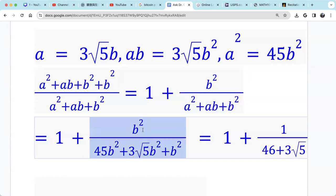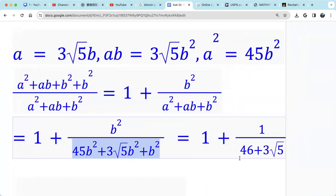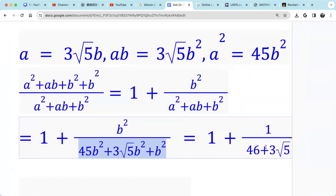So we can simplify it. We divide numerator by B squared, denominator by B squared. So we just get rid of B squared. So we have 1 plus 1 over 45 plus 1 is 46 plus 3 radical 5.